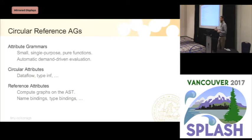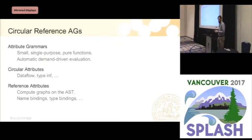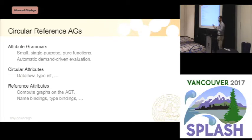An attribute grammar is useful for compilers where you can divide your compilation into small, single-purpose, pure functions. These are automatically evaluated on demand. Circular attributes are really useful for data flow problems, type inference, reachability, and other kinds of fixed point computations. Reference attributes are used for overlaying a graph on top of your abstract syntax tree — for example, name bindings and type bindings as an extra graph on top of the base tree.